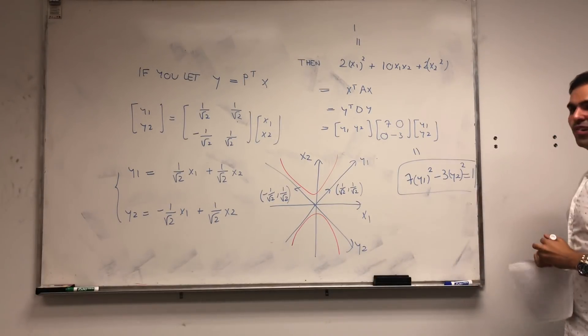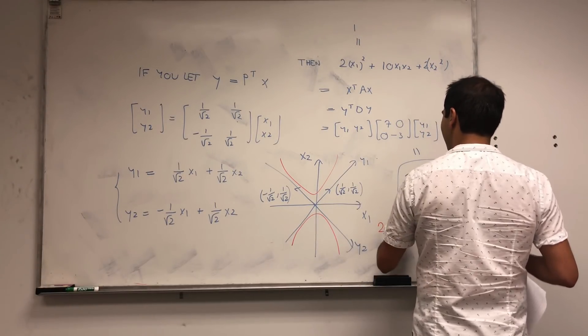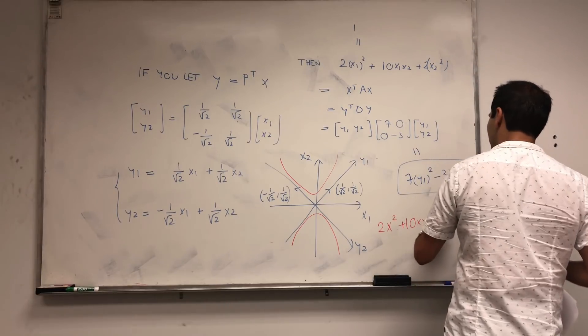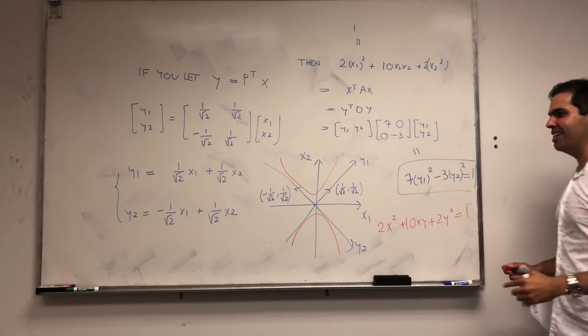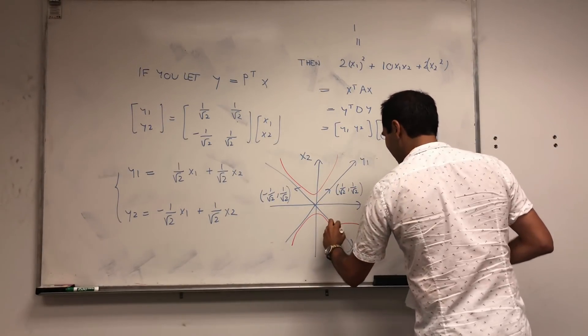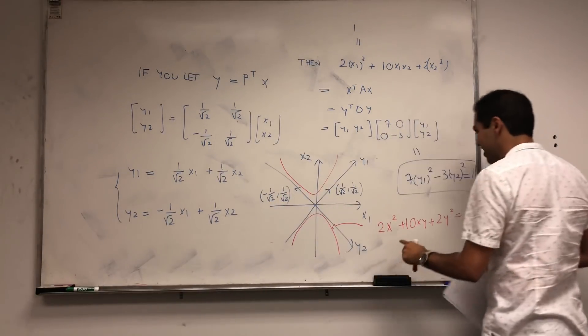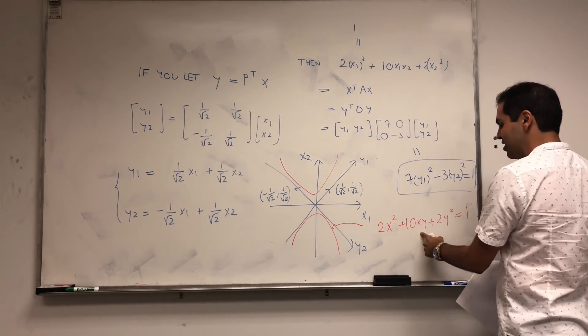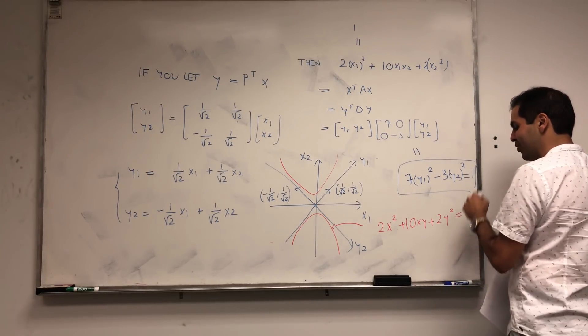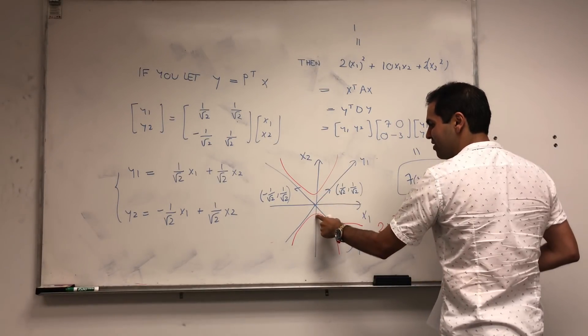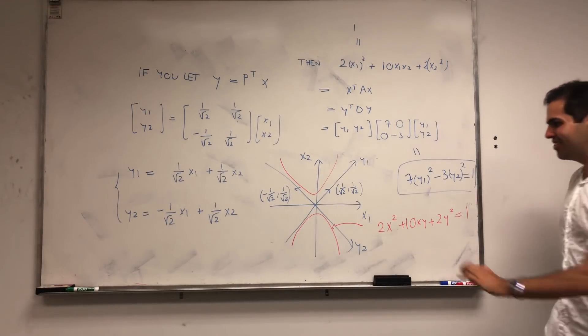In other words, going back to our original question, how do we find what is the curve of 2X squared plus 10XY plus 2Y squared equals to 1? Well, in those new coordinates Y1 and Y2, it just becomes a hyperbola. And the question is, how did I choose the branches? Why did I make it go this way and not this way? Well, all I did, I just plugged in X equals to 0, and if X equals to 0, then we get 2Y squared equals to 1, so Y is plus or minus 1 over square root of 2, so it has to be here.